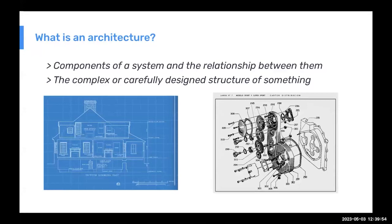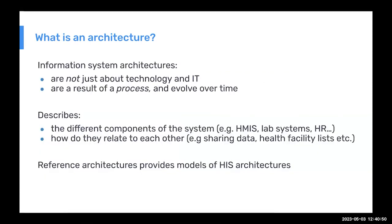What is an architecture? Very often when you think of architecture you think of buildings and blueprints — the instructions for how to build something. There are a few ways to define it: one is all the different components in a system and how they relate to each other; another is the design structure of a system. Of course, as was discussed this morning, an information system is not just about the technology — it's also about the people, processes, and non-technical elements that support it.